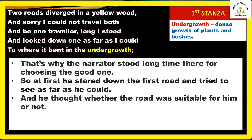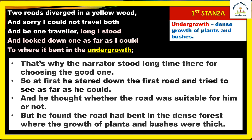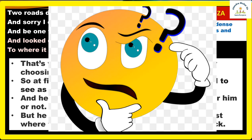Why did he look so carefully? Because he wanted to judge whether the road was suitable for him or not — we always try to evaluate our options before choosing. He found that the first road bent down into the dense forest where the growth of plants and bushes were thick, so he could not see forward clearly. So in the first stanza, the narrator is in a state of confusion about which road to take.